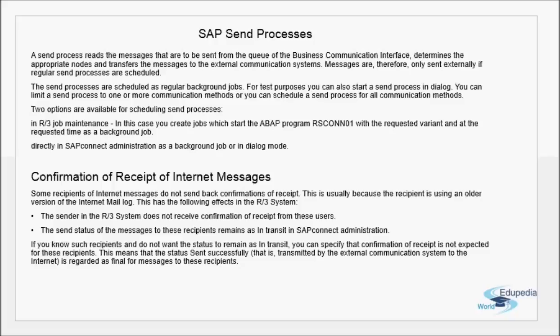The send processes are scheduled as regular background jobs. For test purposes, you can also start a send process in dialog mode. You can limit the send process to one or more communication methods, or schedule it for all communication methods. Two options are available: in R3 job maintenance you create jobs that start the ABAP program RSCONN01 with the requested variant and time as a background job, or directly in the SAP Connect administration as a background job or in dialog mode.